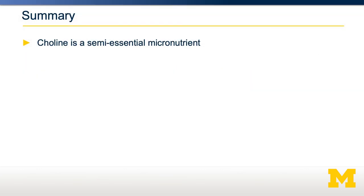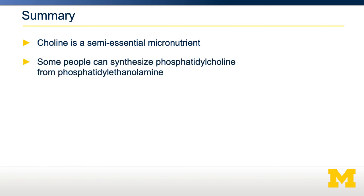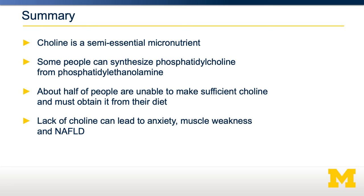In summary, choline is a semi-essential micronutrient. What that means is it's essential for some people — about half the population in America — and dispensable for the other half. Some people are able to make sufficient amounts of choline through the enzyme PEMT, but half of people don't have effective PEMT and therefore must obtain choline from their diet. Insufficient choline intake coupled with an inability to make choline yourself can lead to anxiety, muscle weakness, fatty liver disease, and developmental challenges.